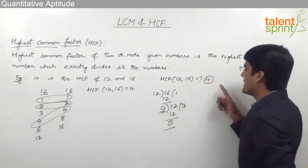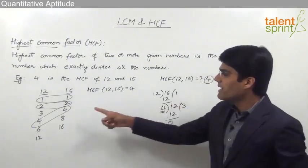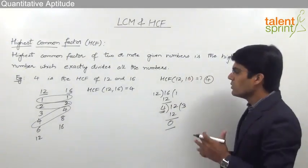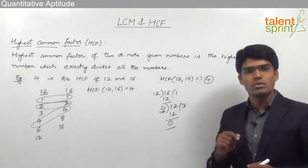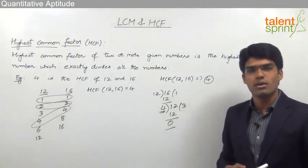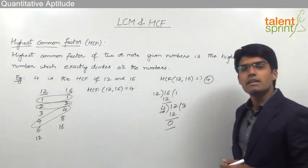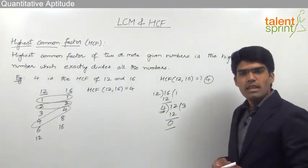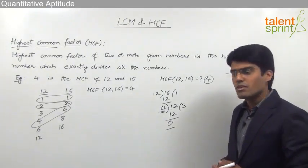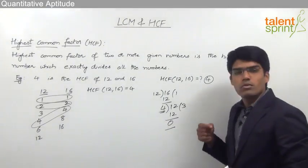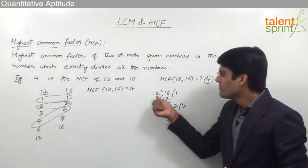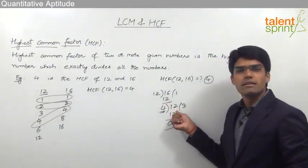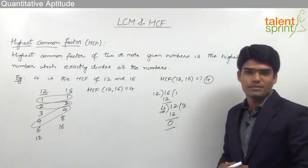To summarize the procedure: take the two numbers, divide the larger by the smaller, and continue the division until the remainder becomes zero. If the remainder is not zero, the previous divisor becomes the new dividend, and the remainder becomes the new divisor. Repeat until the remainder is zero.